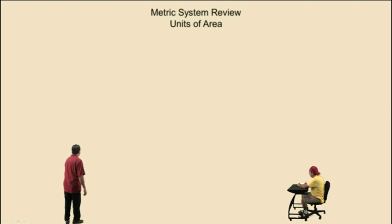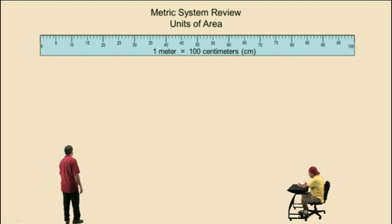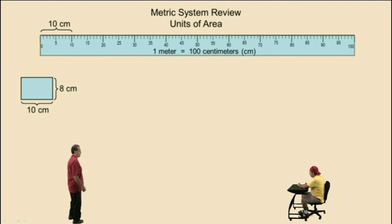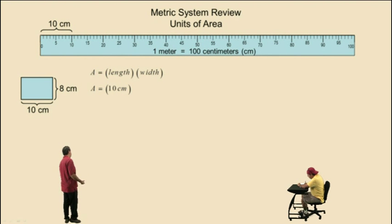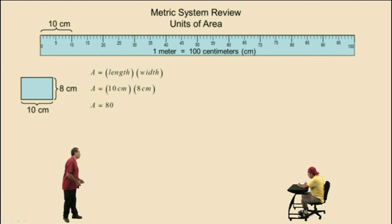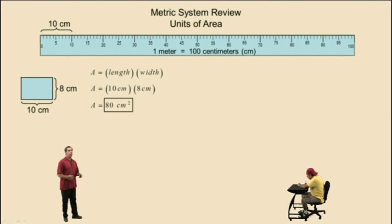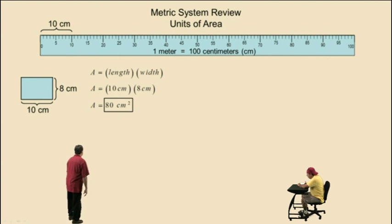Let's look at some units of area. Let's take this rectangle here, and let's say its length is 10 centimeters and its width is 8 centimeters. How do we calculate the area of a rectangle? Length times width. So let's substitute: 10 centimeters times 8 centimeters — 10 times 8 is 80, and centimeters times centimeters is centimeters squared. So we can say 80 centimeters squared, or 80 square centimeters.